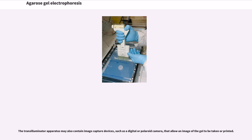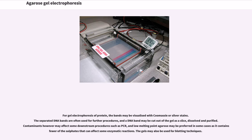Where multiple wavelengths can be selected in the transilluminator, the shorter wavelength would be used to capture images, while the longer wavelength should be used if it is necessary to work on the gel for any extended period of time. The transilluminator apparatus may also contain image capture devices such as a digital or Polaroid camera. For gel electrophoresis of proteins, the bands may be visualized with Coomassie or silver stains. The separated DNA bands are often used for further procedures; a DNA band may be cut out of the gel as a slice, dissolved and purified. Contaminants may affect downstream procedures such as PCR, and low melting point agarose may be preferred as it contains fewer sulfates.